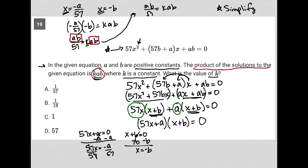So AB over 57 equals KAB. The question wants me to solve for K, right? So how would I do that? Because I have a fraction on the left, I would actually multiply this by 1 over AB. Because that allows me to cross out the ABs and leave me with just K on the right. So I'm solving for K. On the left, because I multiply by 1 over AB on the right, I'd also multiply by 1 over AB on the left.